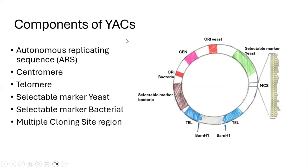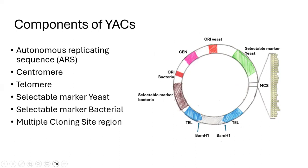Coming to the components of yeast artificial chromosomes, they contain autonomous replicating sequences, which are basically the origin of replication used for propagation in yeast. Similarly, they also have an origin of replication used for propagation in bacteria, allowing yeast artificial chromosomes to be maintained in a bacterial cell. They also have centromeric regions, which are the regions to which spindle fibers attach during cell division, allowing proper separation of the yeast artificial chromosome into both daughter cells.